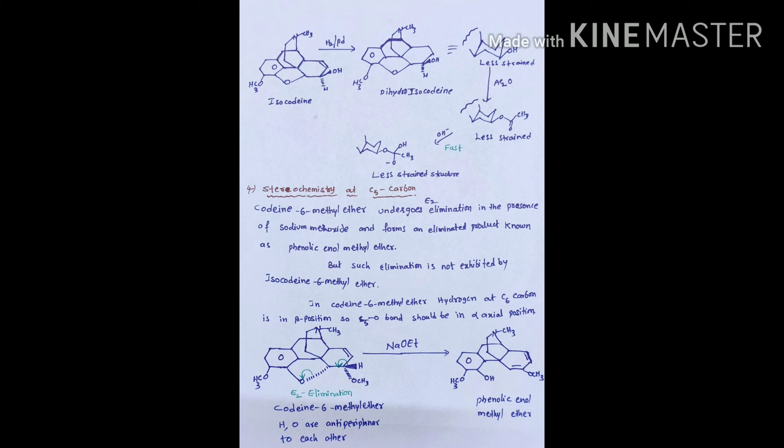This happens because in dihydrocodine acetate, the acetate group lies in the axial position, and in dihydroisocodine acetate, the acetate group lies in the equatorial position. When dihydrocodine acetate undergoes hydrolysis in the presence of base, a more strained structure is obtained, so the saponification becomes slower. In the saponification of dihydroisocodine acetate, a less strained structure is obtained, so that saponification is a fast reaction.